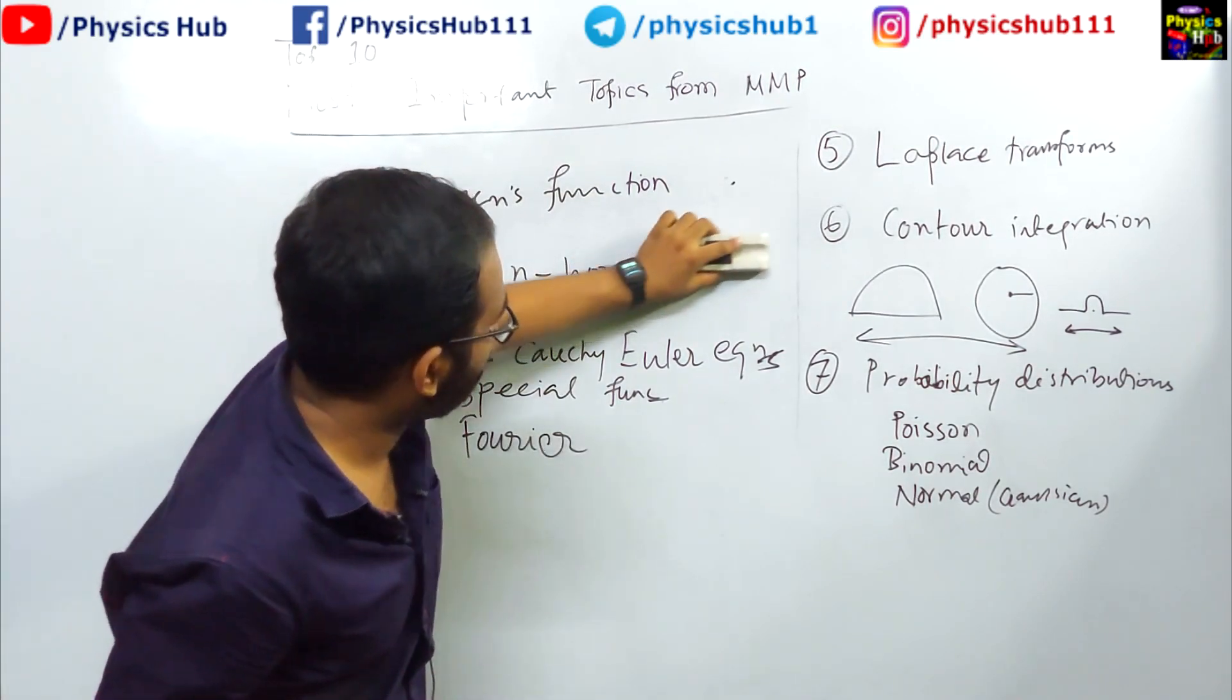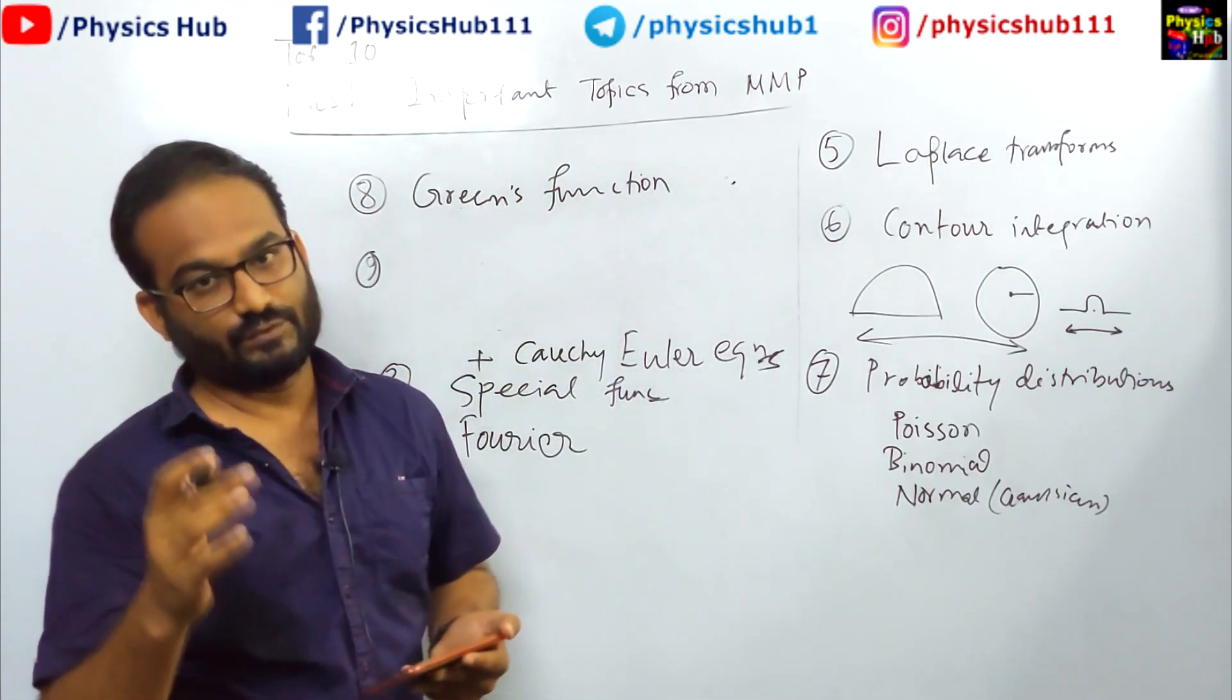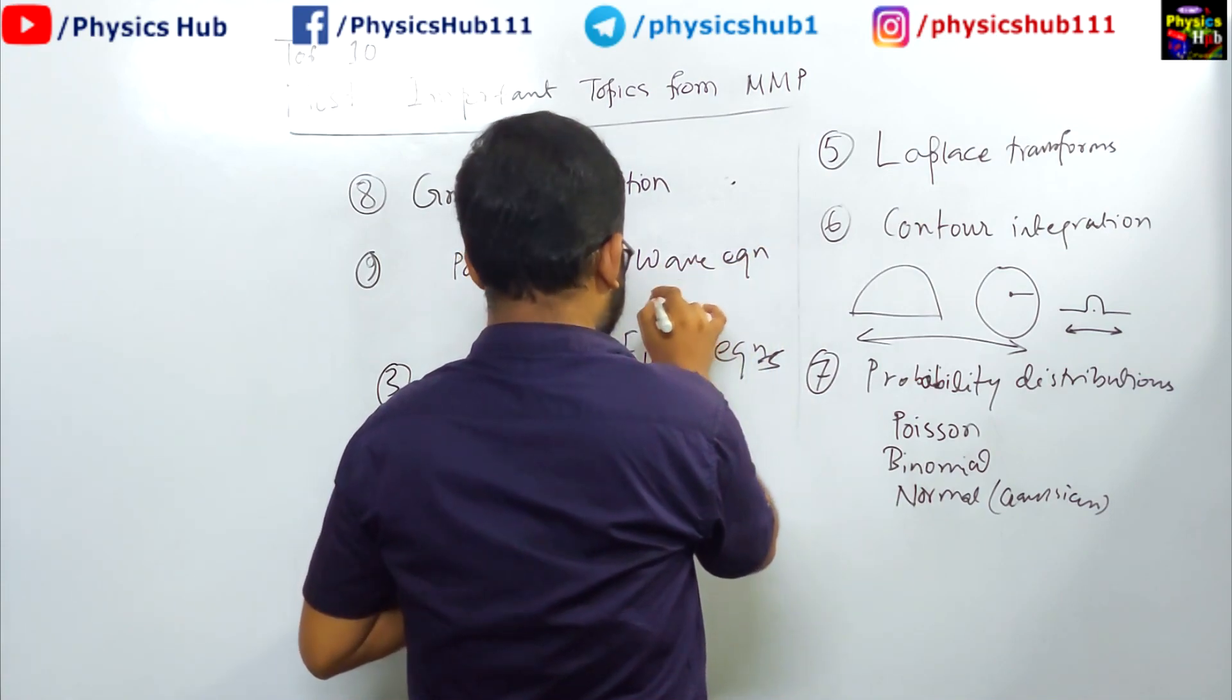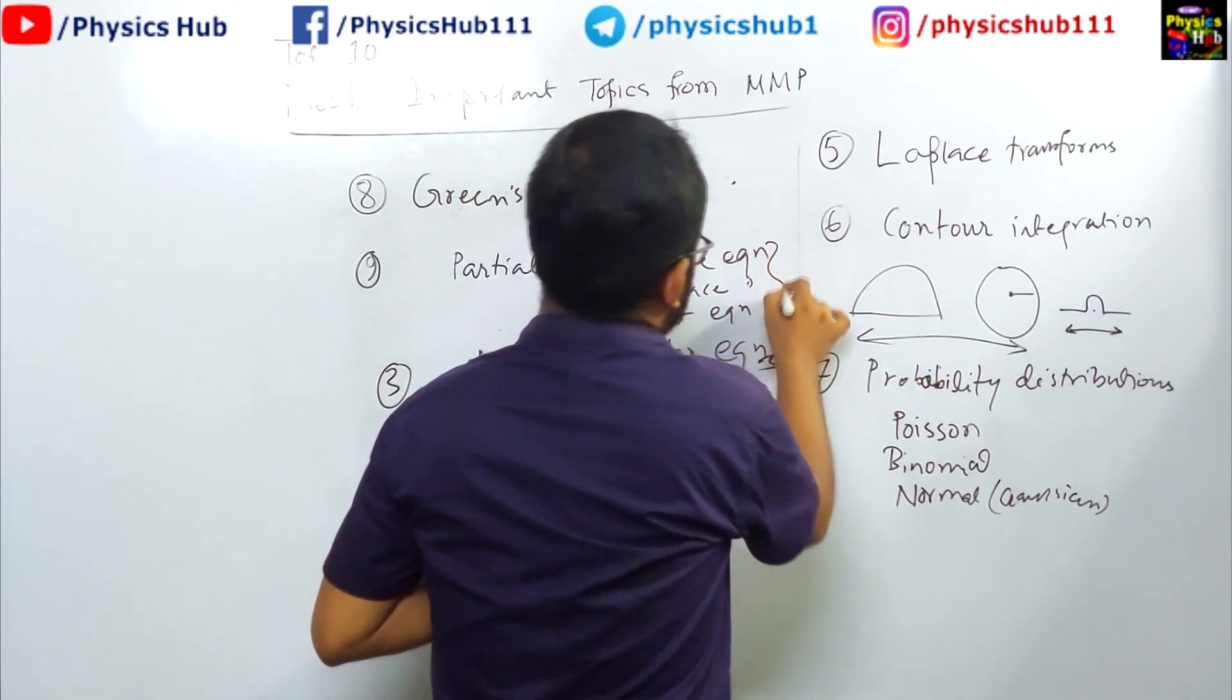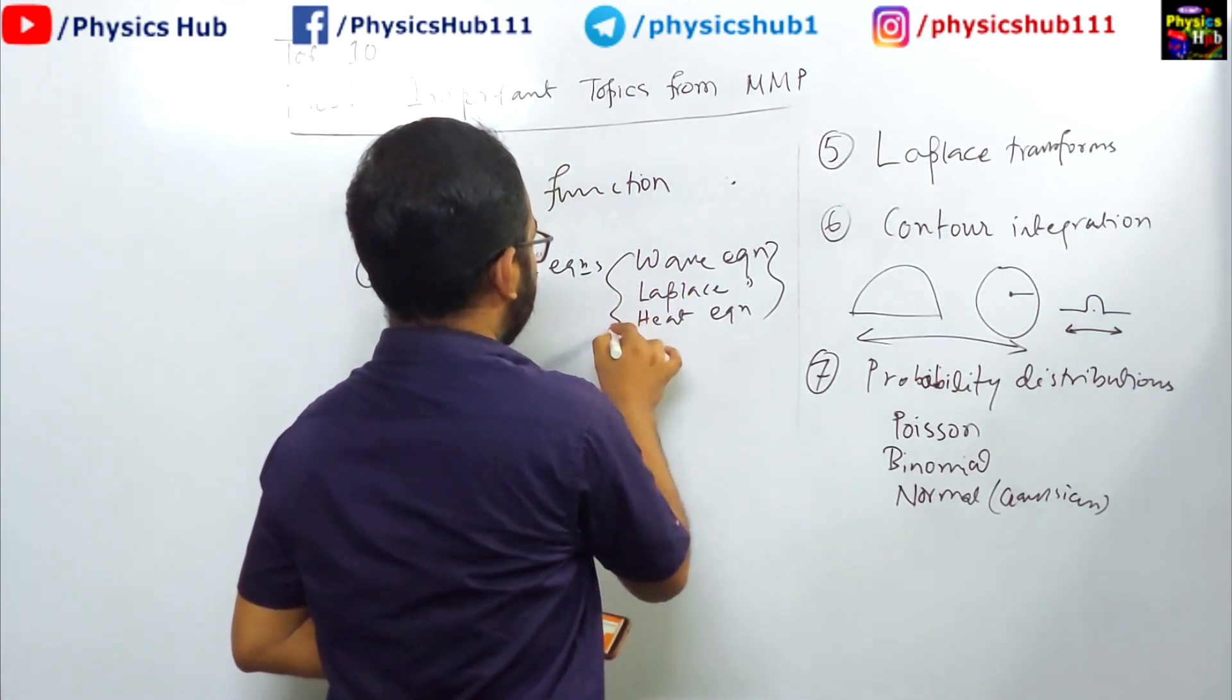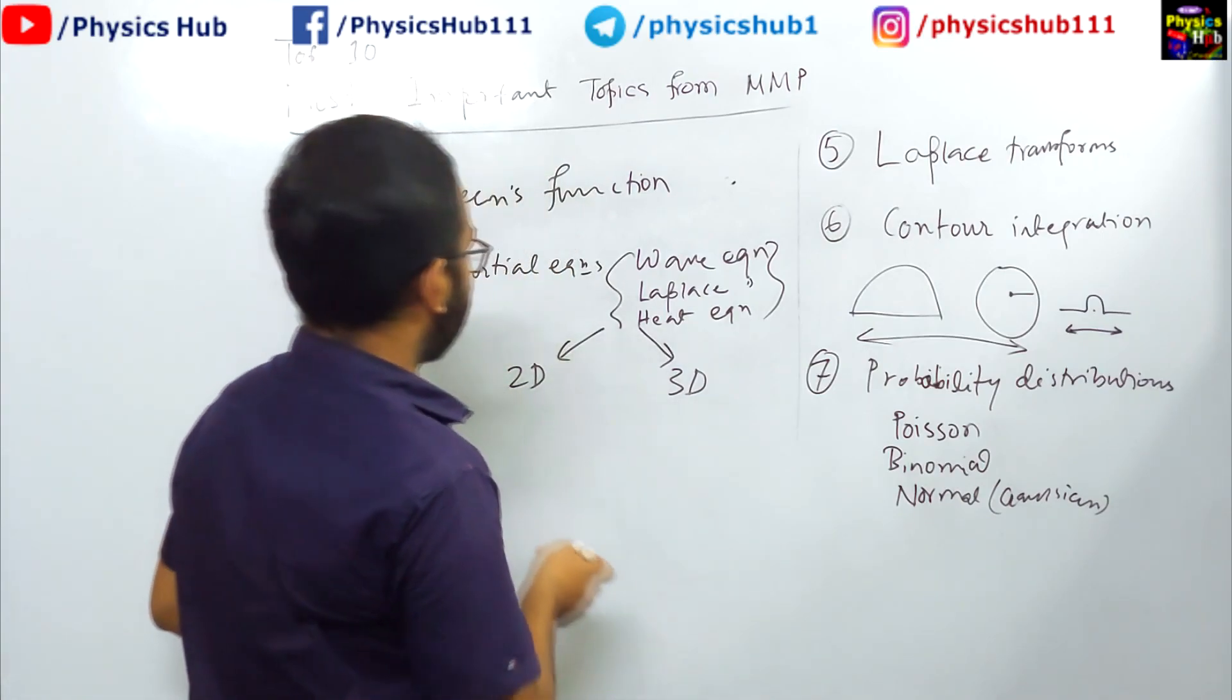Next, number nine topic from mathematical method is - this topic is generally not covered by students, but I would recommend you to cover if you can. Basically, partial differential equations, it includes wave equation, Laplace equation, and heat equations. These equations have forms in 2D and in 3D and you have to learn the solutions. There is a pattern and this is best given in Kreyszig's book, Erwin Kreyszig.